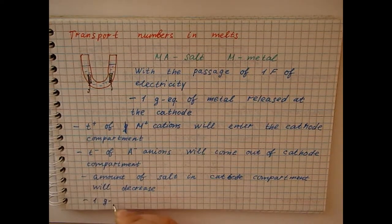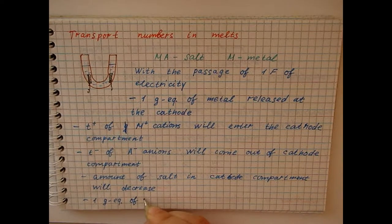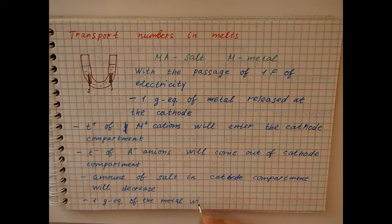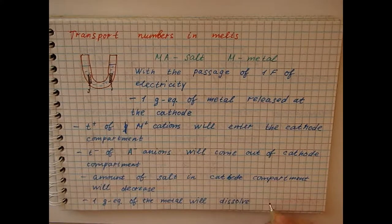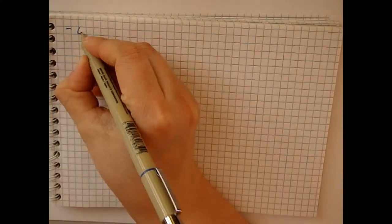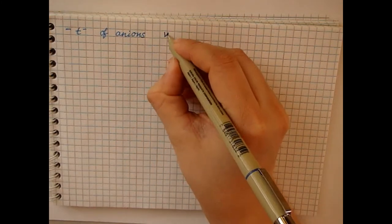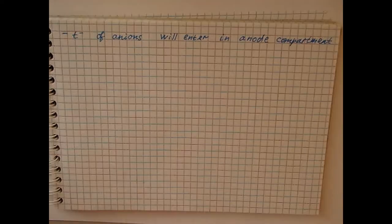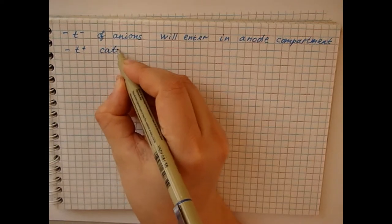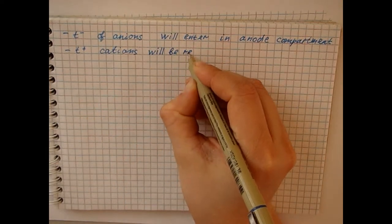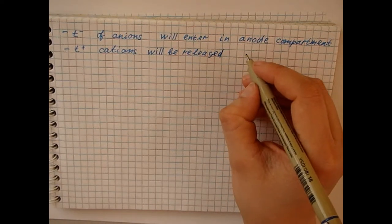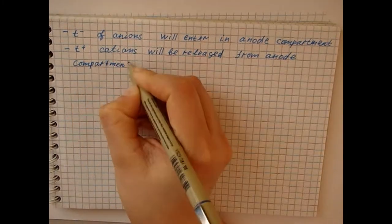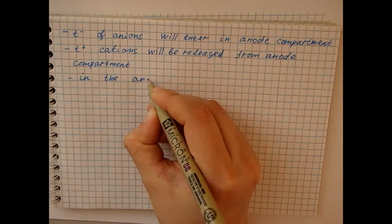In the anode compartment, one gram equivalent of metal at the anode will dissolve. Some number of anions will enter this compartment, and some number of cations will be released from it. Thus, the amount of salt in the anode space will increase.